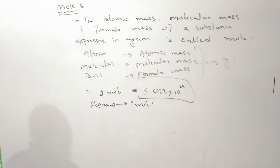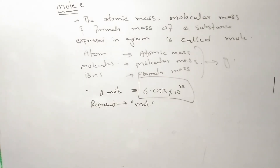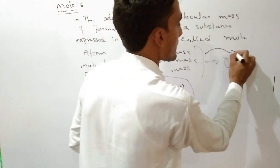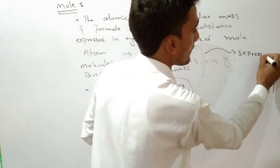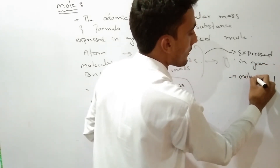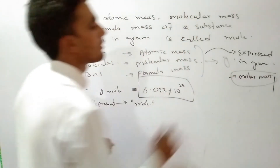The mass of a substance may be atomic mass, molecular mass, or formula mass. These masses are expressed in atomic mass units. When these masses are expressed in grams, they are called molar mass. The mass expressed in grams is the molar mass.